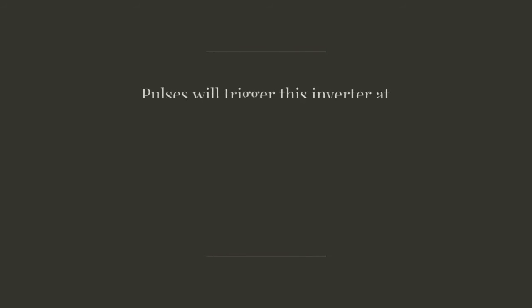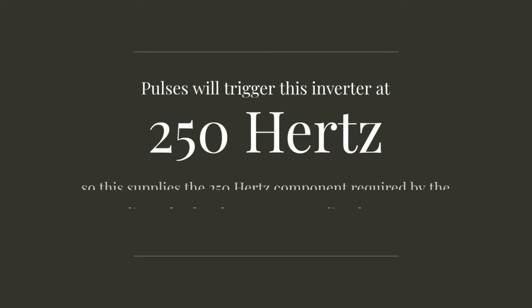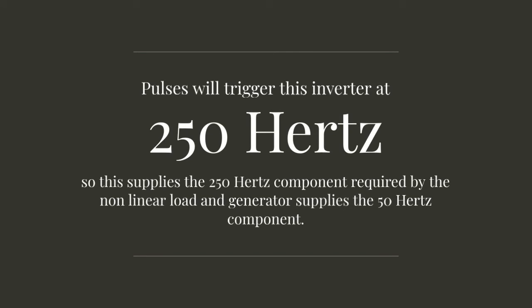So this is shunt active filter. If non-linear load requires fifth harmonic the frequency is 5 into 50, 250 hertz. So I will trigger this inverter at 250 hertz. So this supplies the 250 hertz component required by the non-linear load and generator supplies the 50 hertz component.